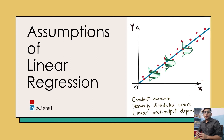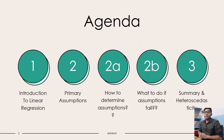Whenever we talk of assumptions, that means introducing bias into our model, and as we know, linear regression is a primary example of having a high bias.